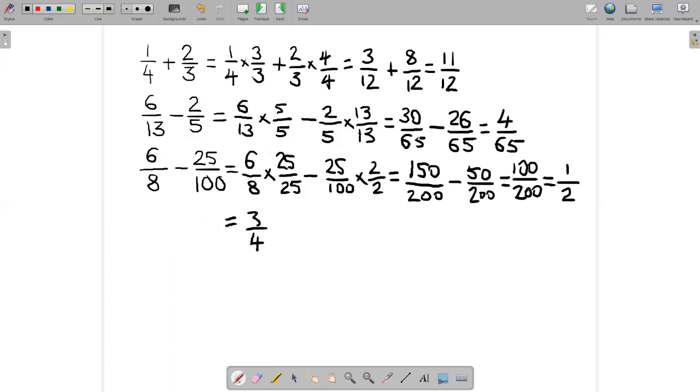If I want to express six eighths using four as the denominator—well, to get to four from eight I divide by two. So if I divide six by two, I'll get three. Six eighths is equivalent to three quarters.